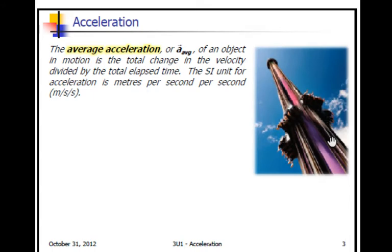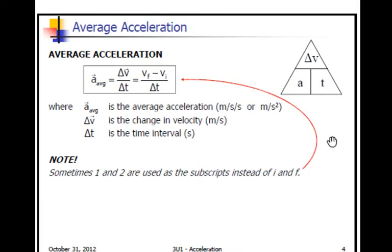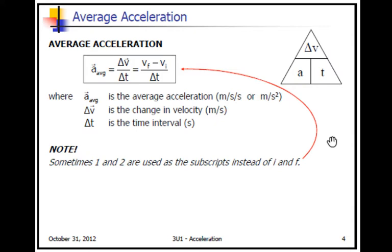Average acceleration is your change in velocity divided by a time period. So the units for it would be meters per second per second, or meters per second squared. Here we have our average acceleration. It's the final velocity minus the initial velocity divided by the time period. You might see our initial case sometimes given a subscript 1, and the final case sometimes given a subscript 2. I use them a bit interchangeably. Other times you see f and i.